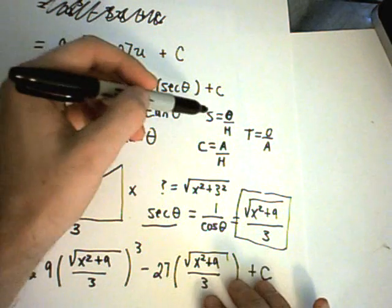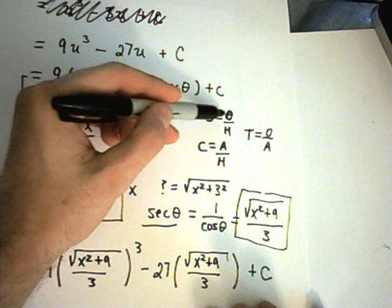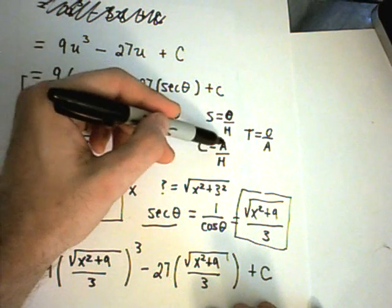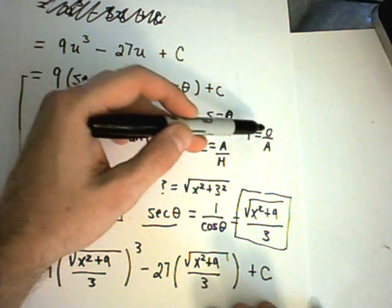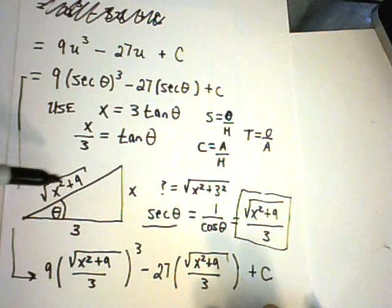We're going to use the mnemonic SOHCAHTOA. Sine is opposite over hypotenuse, cosine is adjacent over hypotenuse, and tangent is opposite over adjacent.